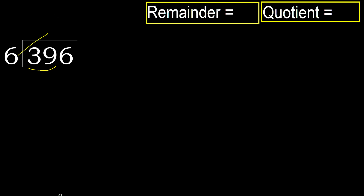6 multiplied by which number is nearest to 39 but not greater? 6 multiplied by 7 is 42, which is greater. Multiplied by 6 is 36, which is not greater. Subtract: 39 minus 36 equals 3.